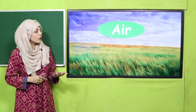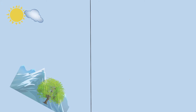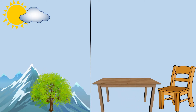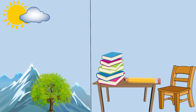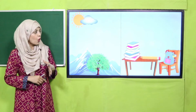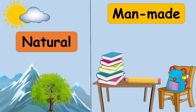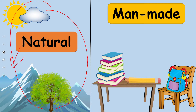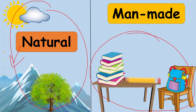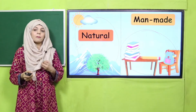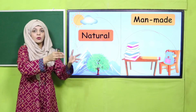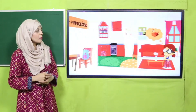On your screen you can see on one side all the natural things — mountains, trees, clouds, sun, air, water — all these things are natural resources. Whereas on the other side you can see man-made things: books, table, chair, pencil on the table, and a bag on the chair. So this side is natural and this side is man-made. Books, tables, pencils, bags, and chairs are obviously made by people.